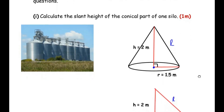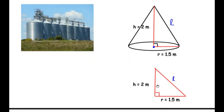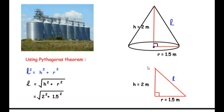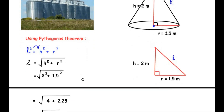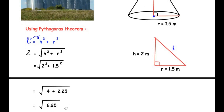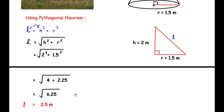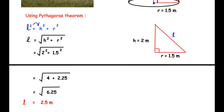We have redrawn this and shown it as a right-angled triangle. Now we can use the Pythagoras theorem to find out the slant height. Using Pythagoras theorem, the slant height squared equals the perpendicular height squared plus the radius squared. Taking the square root, L equals √(H² + R²). Plugging in the values: √(2² + 1.5²) = √(4 + 2.25) = √6.25 = 2.5. So the slant height of the conical part is 2.5 meters.